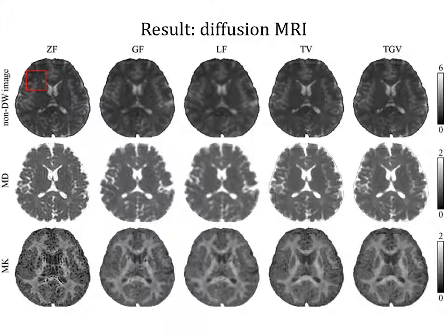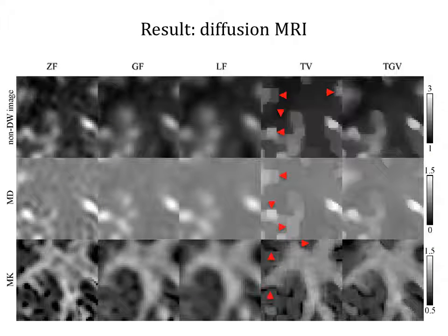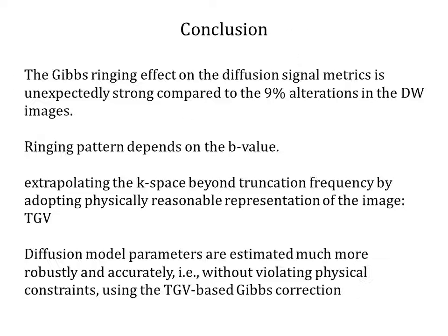Very similar results are also obtained for diffusion MRI datasets. Gibbs ringing is clearly visible in the original data. However, the effect is fully suppressed in the total variation approaches, and the black voxels in the kurtosis map disappear too. The differences between TV and TGV are clearly visible on the level of the images and the parameter maps. We have shown that the effect of k-space truncation on the diffusion metrics of interest is unexpectedly strong compared to the 9% fluctuations seen in the diffusion-weighted images. To cure this problem without resolution loss, we describe a comprehensive framework of extrapolating the k-space beyond the truncation frequency by adopting a physically reasonable representation imposed by the second-order Total Generalized Variation (TGV) function. Diffusion model parameters are estimated much more robustly and accurately without violating physical constraints using the TGV-based Gibbs correction.